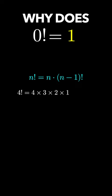Another way we define factorials is through its recursive definition. n factorial is n times n minus 1 factorial. So 4 factorial, which is 4 times 3 times 2 times 1, is the same as 4 times 3 factorial.